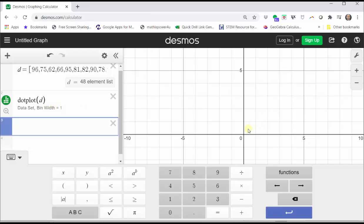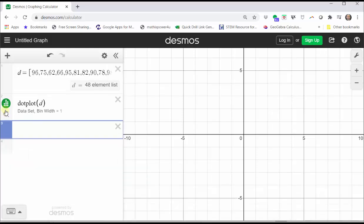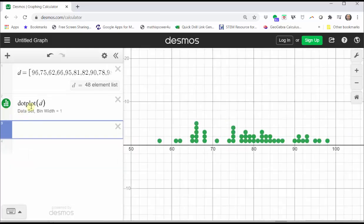Notice how we don't see anything. We need to adjust the window. We can do this quickly by clicking the Zoom Fit button below the green circle. And now we have our dot plot.